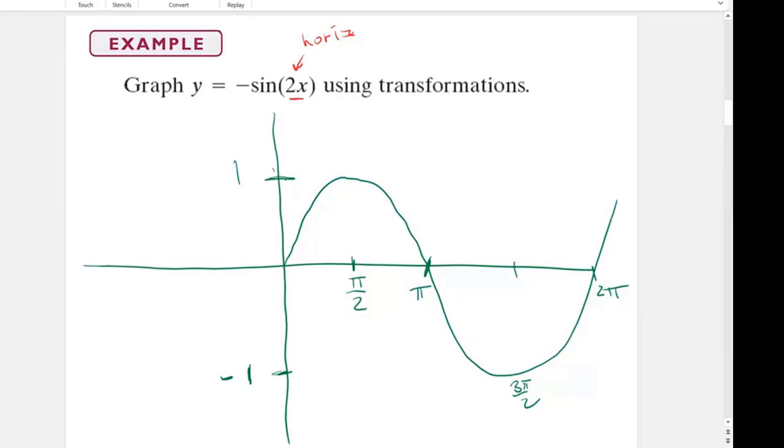So what do I mean by that? Well, 0 is still going to stay 0. That's for sure. But I'm going to take this pi over 2 and I'm going to divide it by 2, which gives me pi over 4.